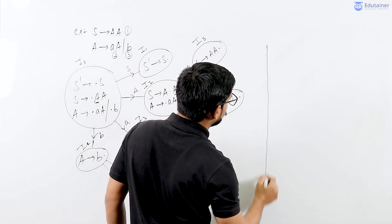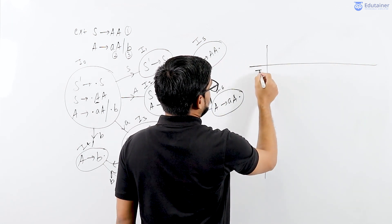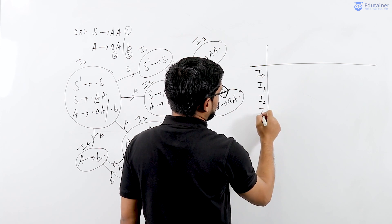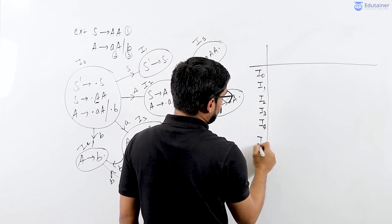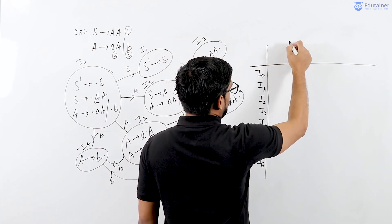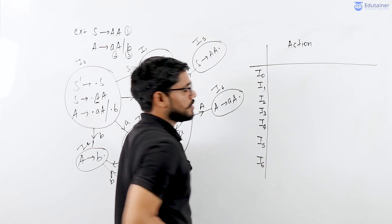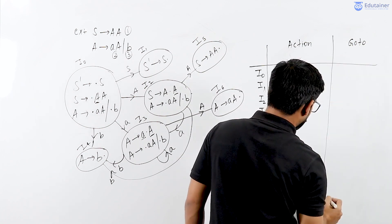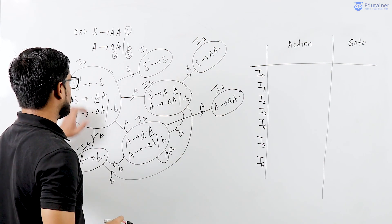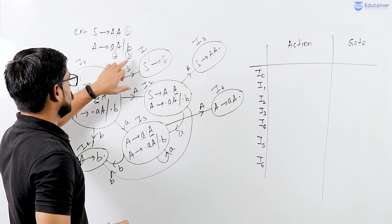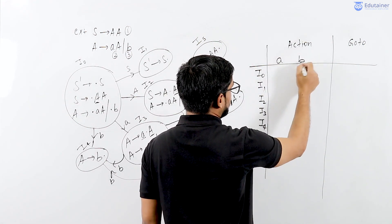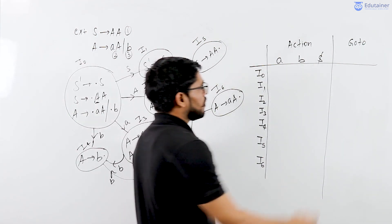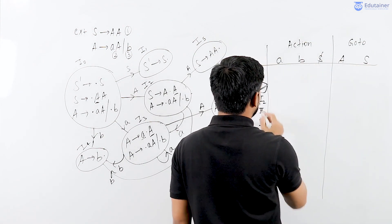Let us construct the SLR1 parsing table. The SLR1 parsing table contains total seven states: I0, I1, I2, I3, I4, I5, and I6. In the columns we have two separate sections — the action section and the goto section. The action column contains the terminal part. The terminals here are small a, small b, and dollar. There are total two variables: capital A and capital S.